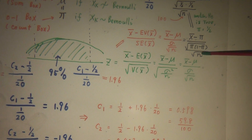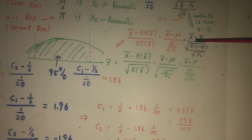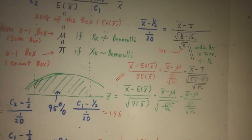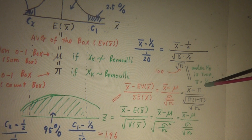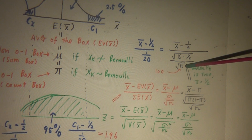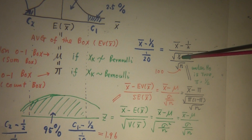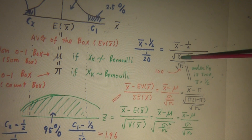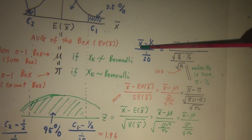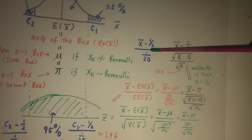Under the assumption that H0 is true, we have pi equal to 50%. So we plug in 50% for pi times (1 minus pi), and n equals 100. And then simplifying the expression, we get X̄ minus one-half divided by 1 over 20.